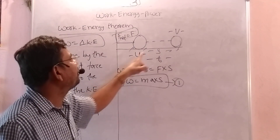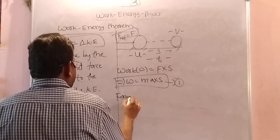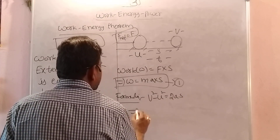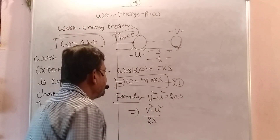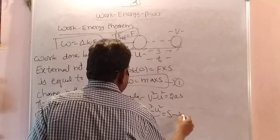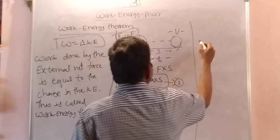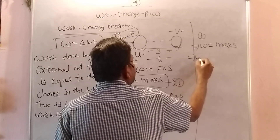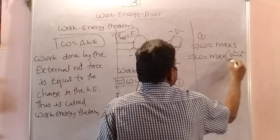Now, initial velocity is u, final velocity is v, and displacement is S. I am applying the third kinematic equation. The formula is: V² minus U² equals 2AS. Otherwise, write S as V² minus U² divided by 2A. That I am taking as S — this is my second equation. Now, substituting this S value into the first equation: W equals MA into S, which equals MA into (V² minus U²) divided by 2A.